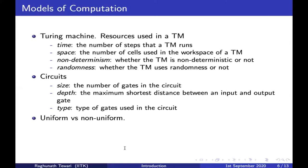Circuits are not uniform. A circuit only has a fixed number of variables it can take as input. If you have an input whose length is n+1 or n+2, you cannot feed it to the same circuit — you need a different circuit for that input. The usual way to handle this is to have what is called a circuit family instead of a single circuit.